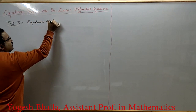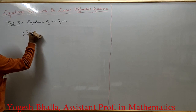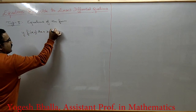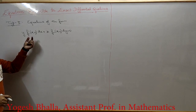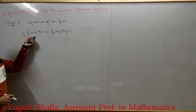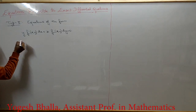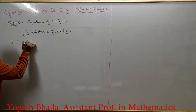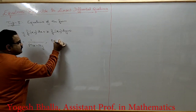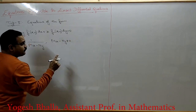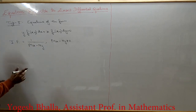Type 2 consists of equations of the form y·f1(xy)dx + x·f2(xy)dy = 0, that is, equations in which we can take y common from the M part and x from the N part. For these equations, the integrating factor is 1/(mx − ny), with the condition mx − ny ≠ 0. In the homogeneous case it was 1/(mx + ny); now we have mx − ny.